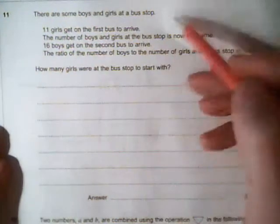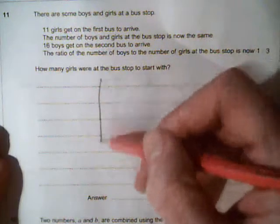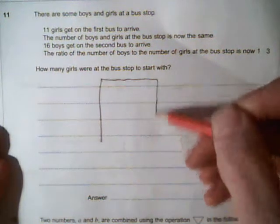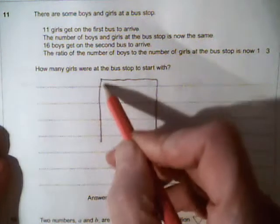So there are some boys and girls at a bus stop, so let's just draw a sketch. Bus stop. Boys on the left, girls on the right.